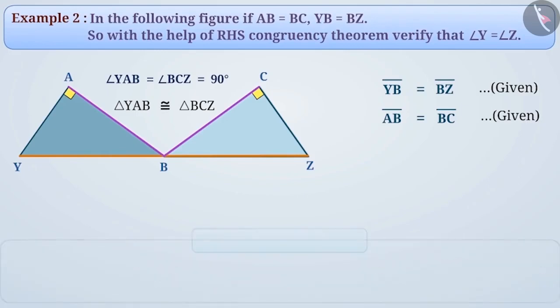From this, we can say that triangle YAB and triangle BCD are congruent under RHS congruency theorem. Here, vertex Y is corresponding to the vertex Z. Vertex A is corresponding to the vertex C. Vertex B corresponds to the vertex B. That is, YAB corresponds to ZCB.